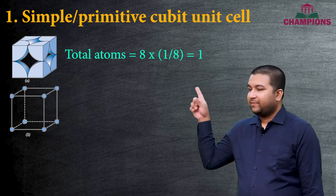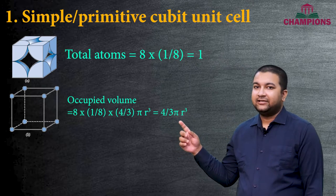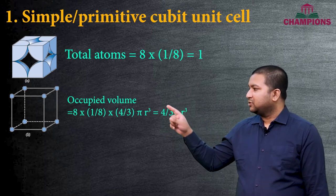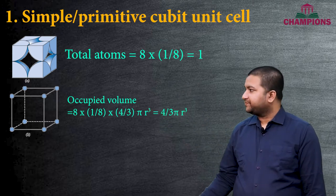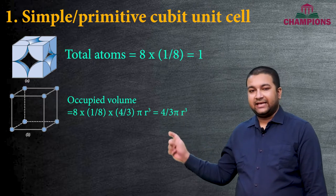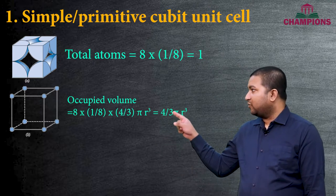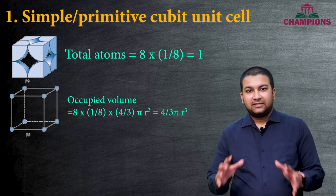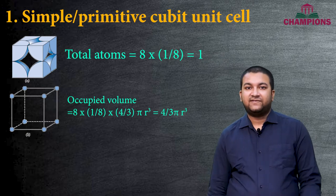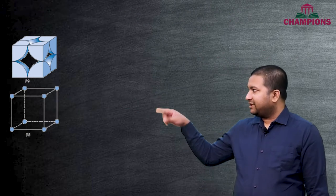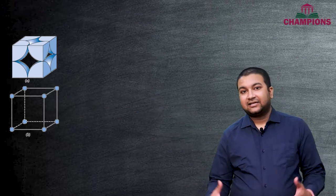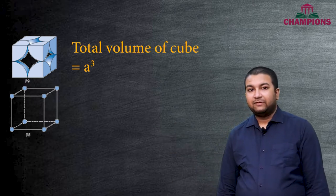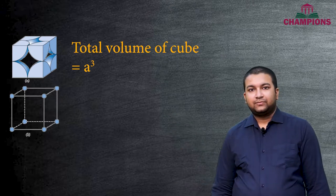To calculate the total occupied volume, there are eight one-eighth atoms, so the occupied volume is: 8 × (1/8) × (4/3)πr³, because (4/3)πr³ is the volume of one spherical atom. The cube has a total volume of a³, where a is the side length of the cube.